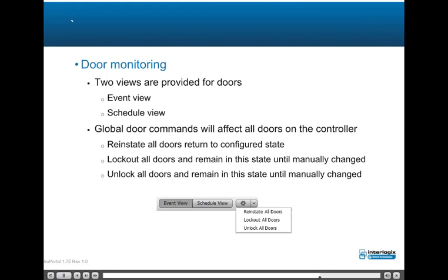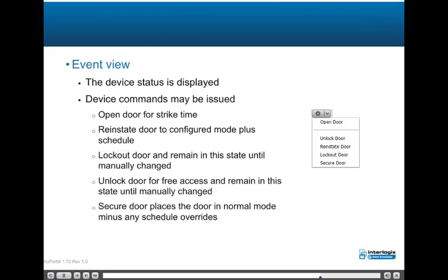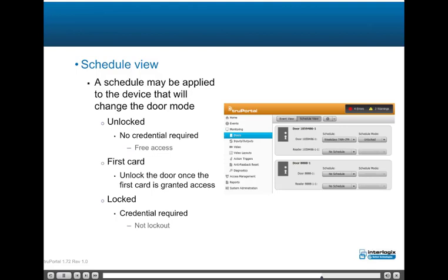In Event View, the device status is displayed and device commands may be issued: open door for strike time, reinstate door to configured mode plus schedule, lock out door (remain in this state until manually changed), unlock door for free access (remain in this state until manually changed), and secured door which places the door in normal mode minus any schedule overrides. In Schedule View, a schedule may be applied to the device that will change the door mode: unlocked (no credential required, free access), first card (unlock the door once the first card is granted access), or locked (credential required, not lockout).